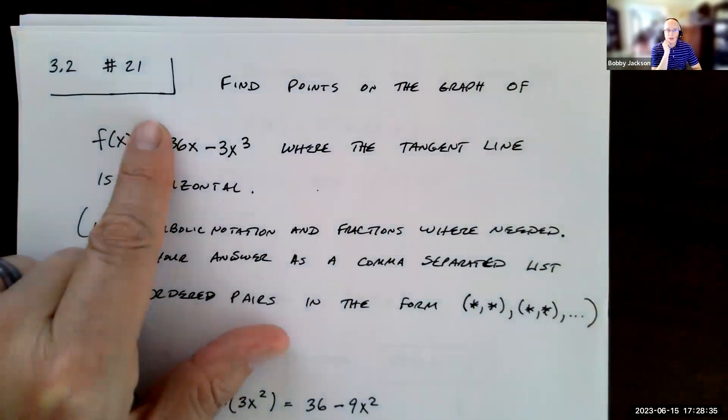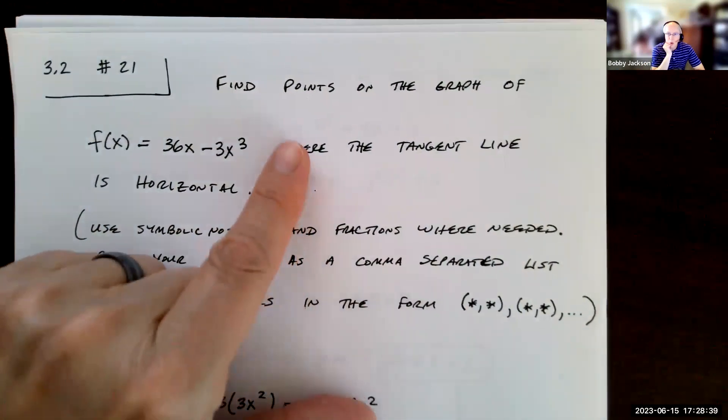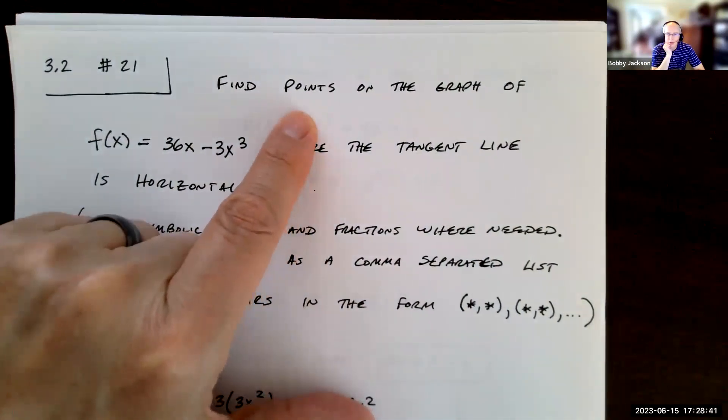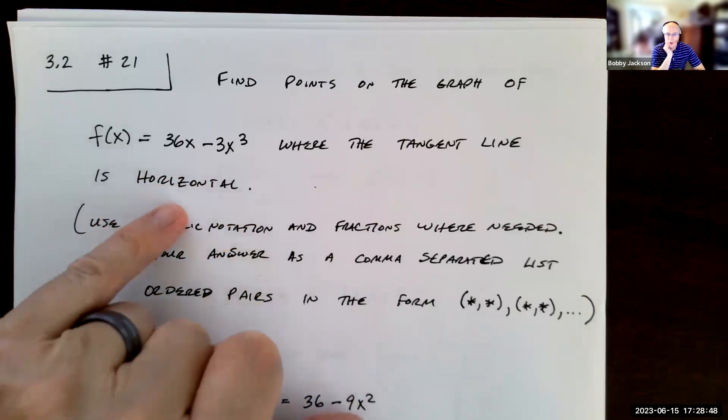Okay, we're going to look at number 21 in section 3.2. We're going to find points on the graph of this function f(x) = 36x - 3x³ where the tangent line is horizontal.